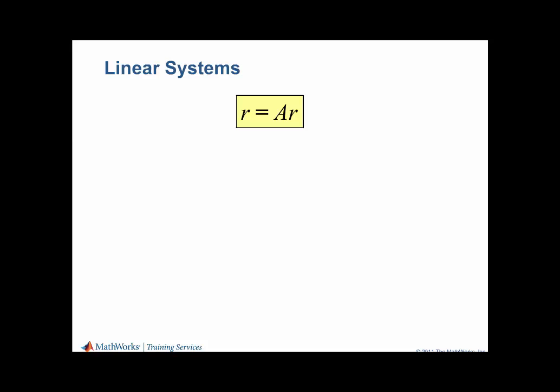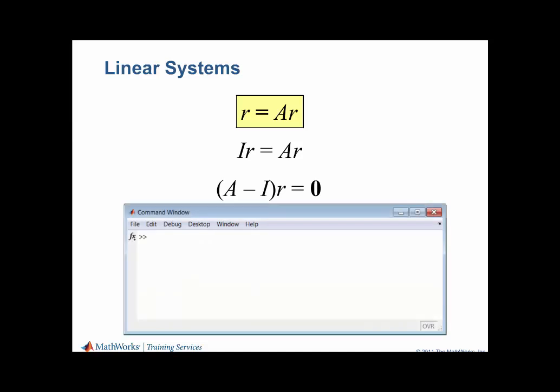Let's rearrange the equation using the identity matrix I and gather the unknown terms r. Now we have the form of matrix times vector equals a known vector. In this case, the right-hand side is the vector of zeros. However, trying to solve this system in MATLAB results in a warning message. r equals zero is a valid, albeit unhelpful, solution to the system.